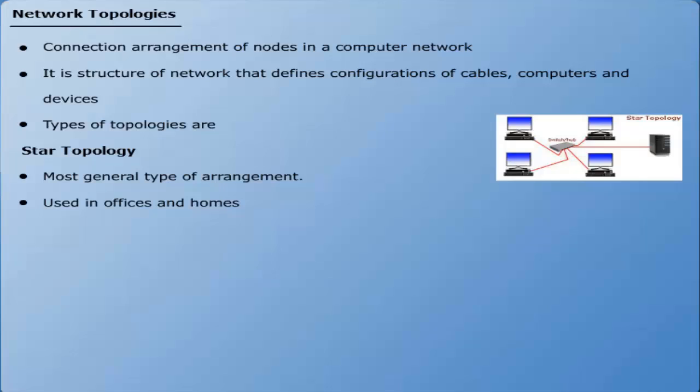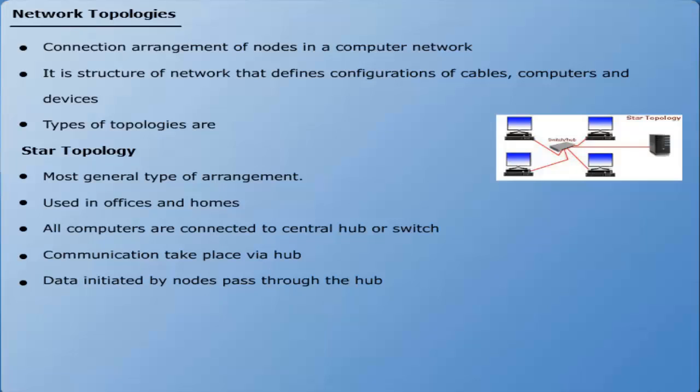In star topology, all the computers are connected to a central hub or switch. The communications take place via hub, which acts as a common connection device. All the data initiated by nodes pass through the hub. The hub forwards it to the destination node. Hub also manages and controls the whole network.